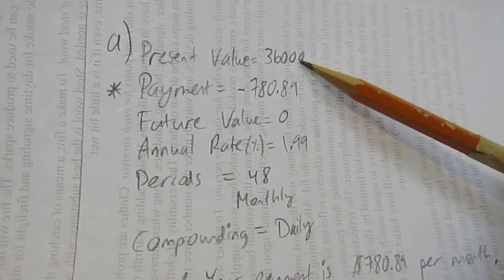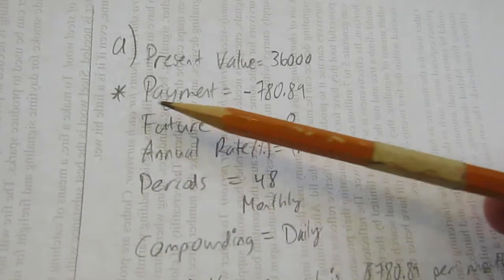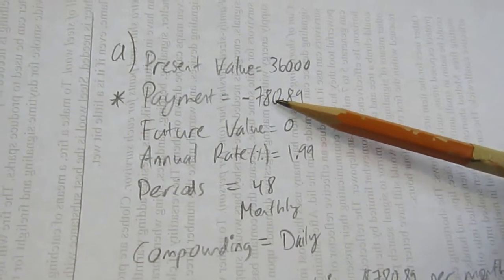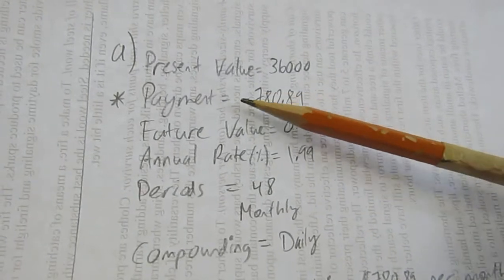It's $36,000 we're borrowing. We solve for the payment, put a star. The payment was $780.89, notice the negative.